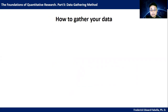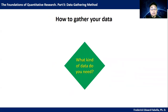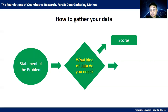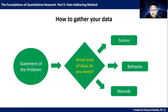Let's ask the question: what kind of data do you need? The kind of data that you need will depend on your statement of the problem. You might need scores, or you might need information about behavior, or you might need records. These are the general types of data that you might need depending on your statement of the problem.